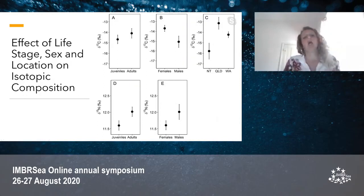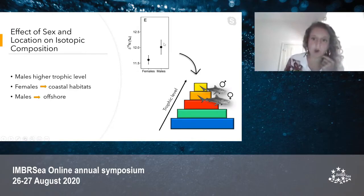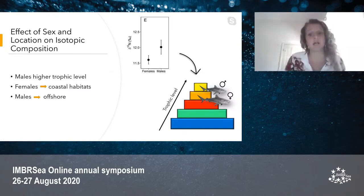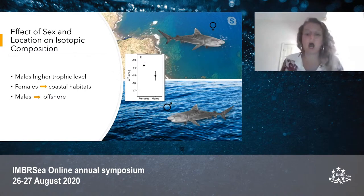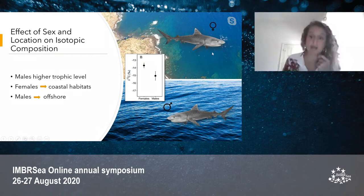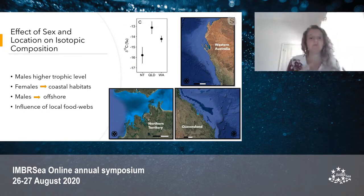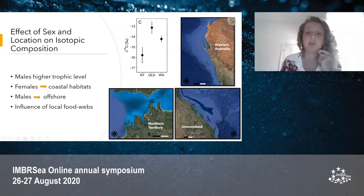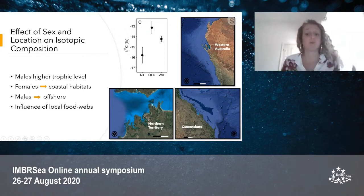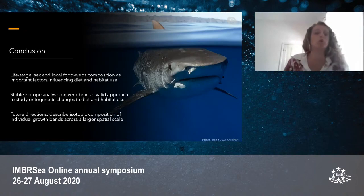For the carbon dataset, life stage, sex, and location are important factors affecting isotopic values. For the nitrogen dataset, only life stage and sex are important influencing factors. We found that males had higher nitrogen levels than females, indicating males probably occupy a higher trophic level. We also found higher carbon values in females compared to males, indicating females are more likely associated with coastal habitats and males with more offshore habitats. Finally, we found different carbon values for different locations, reflecting the influence of local food webs on diet and habitat use.